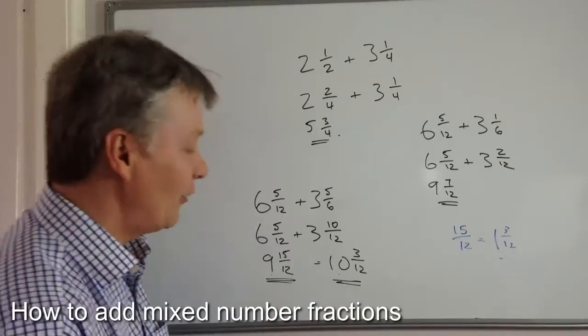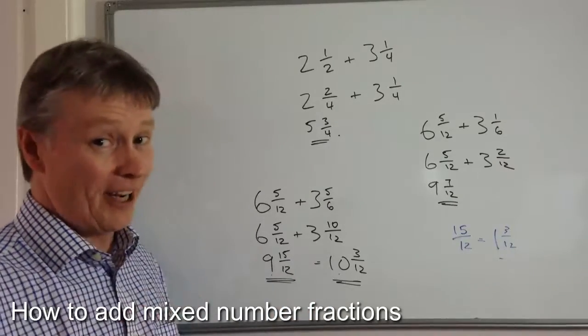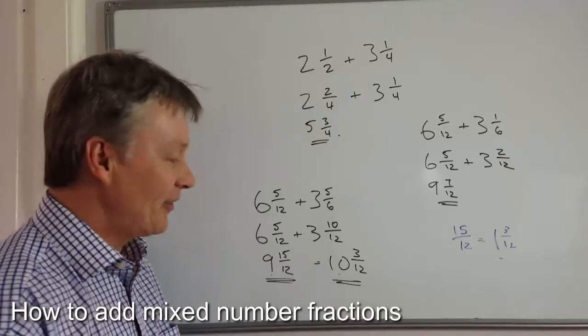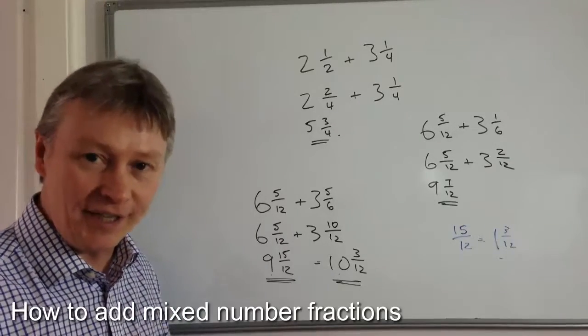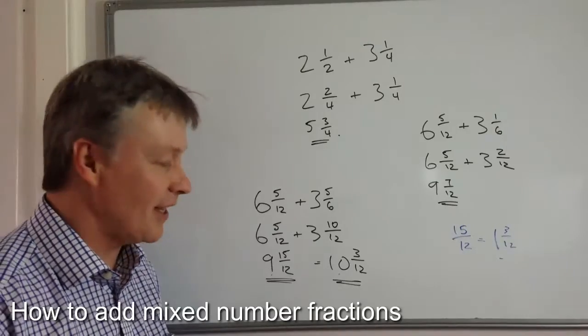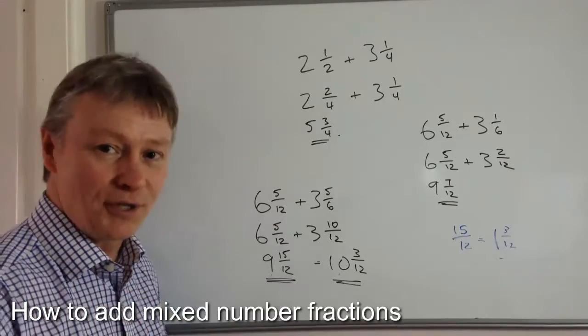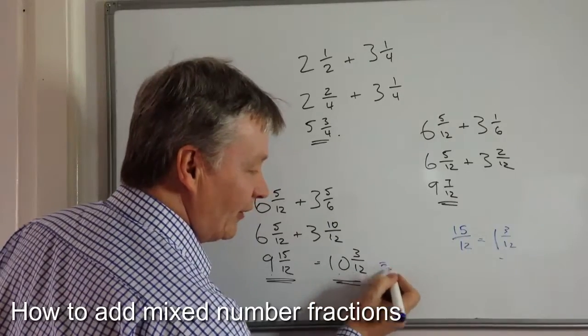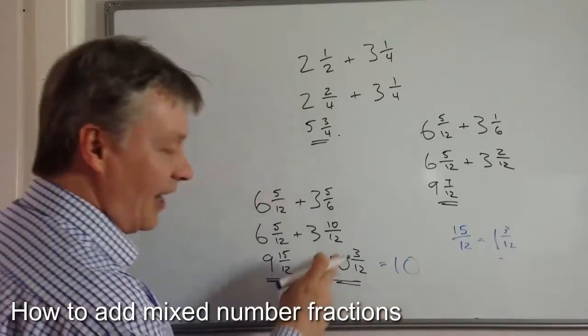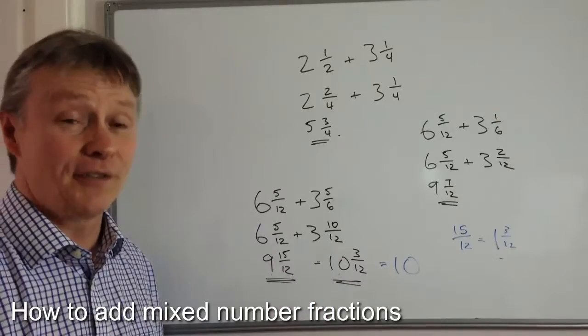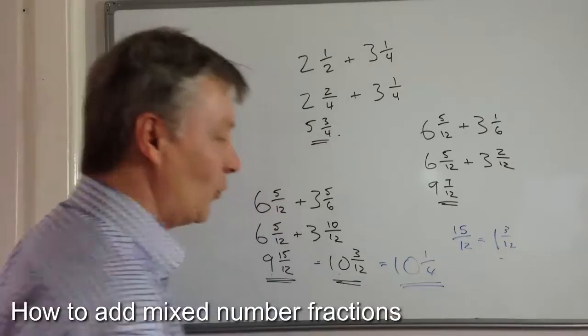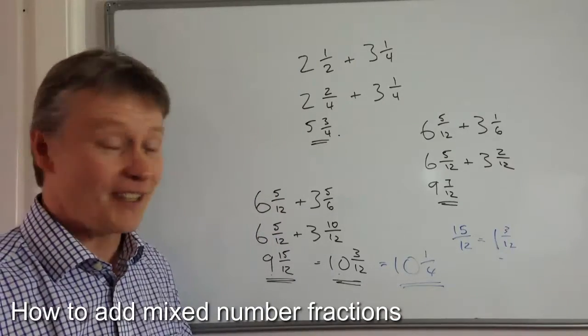Now maybe you've spotted the deliberate error at this particular point where when you're dealing with fractions it's always a great idea to reduce them as much as you possibly can. So what I'm going to do is I'm going to give my final answer which is ten. And this three over twelve I'm going to divide through by three. So that becomes ten and one quarter as my final answer.